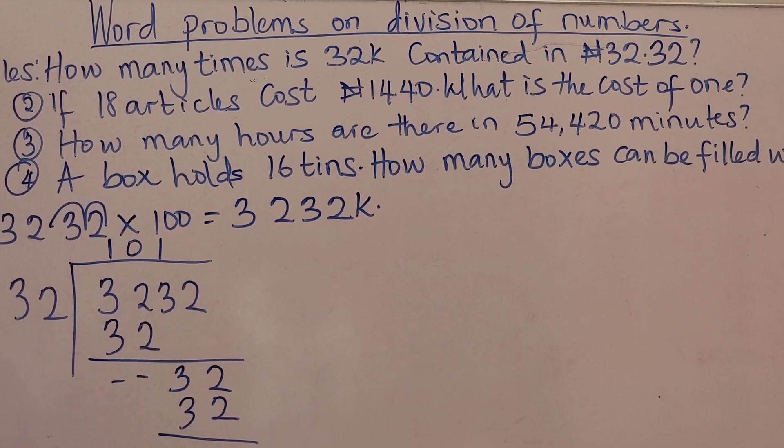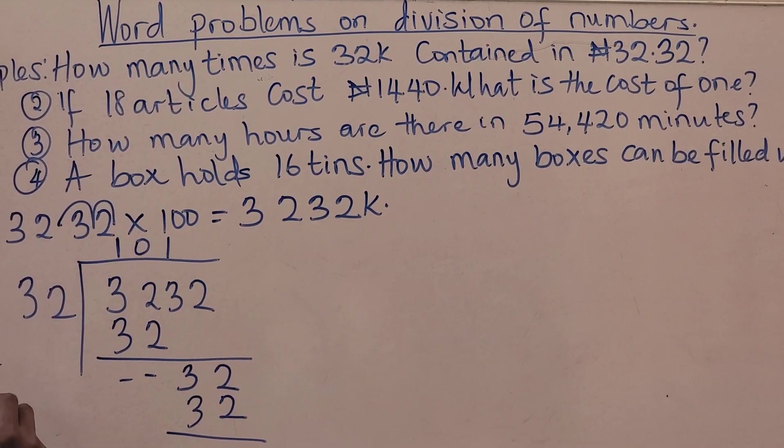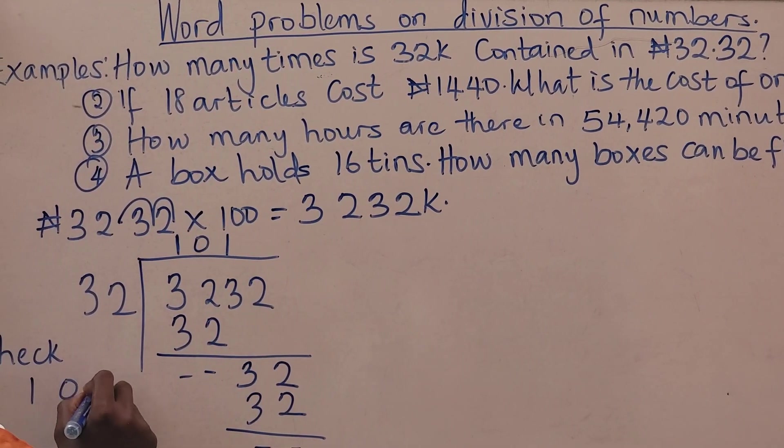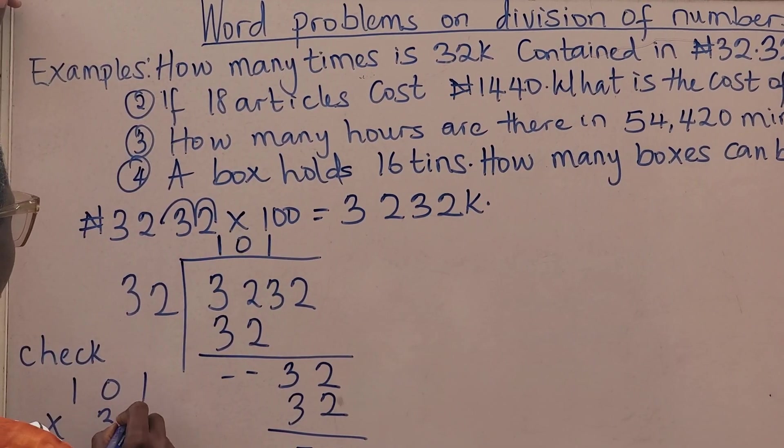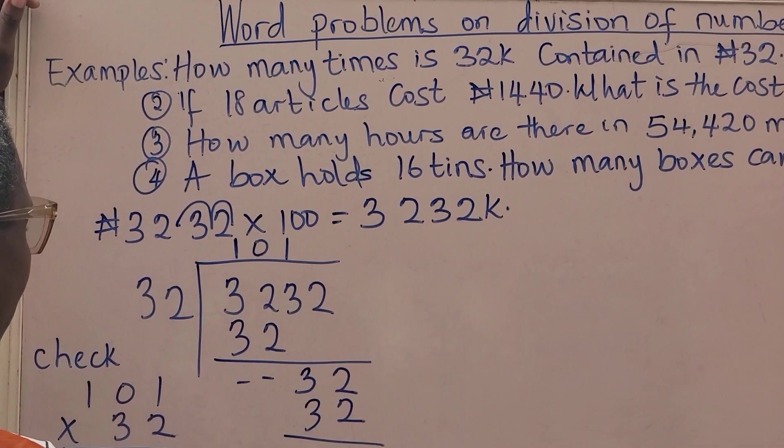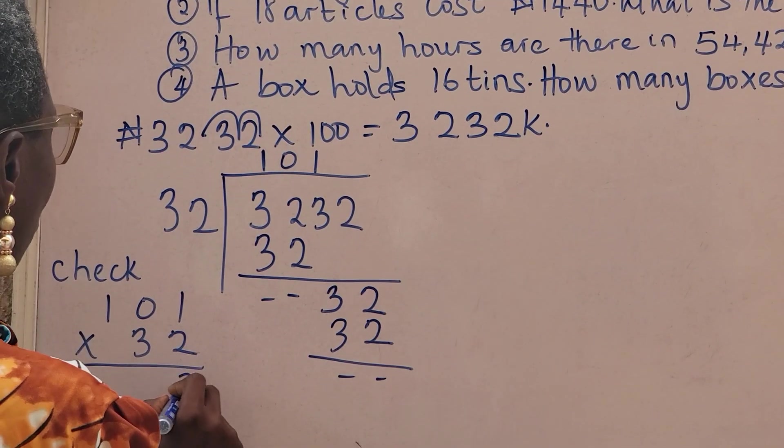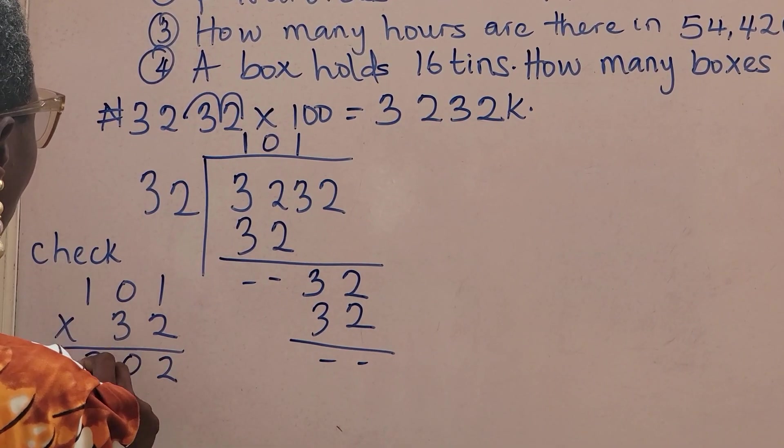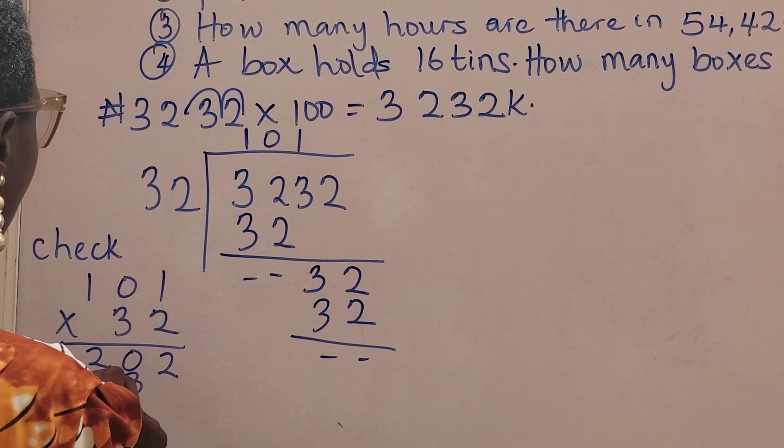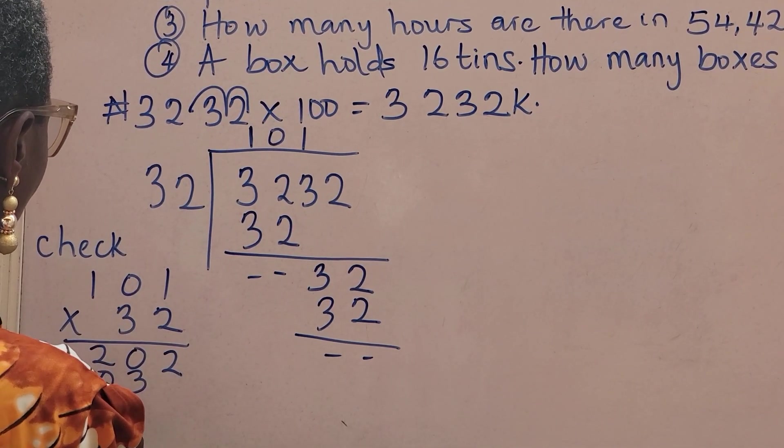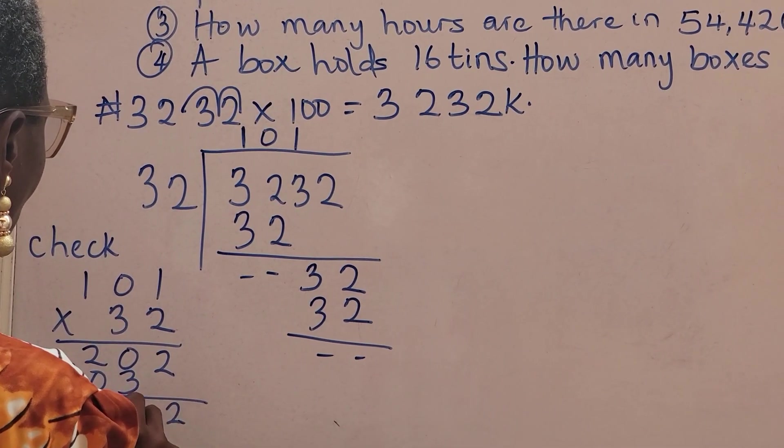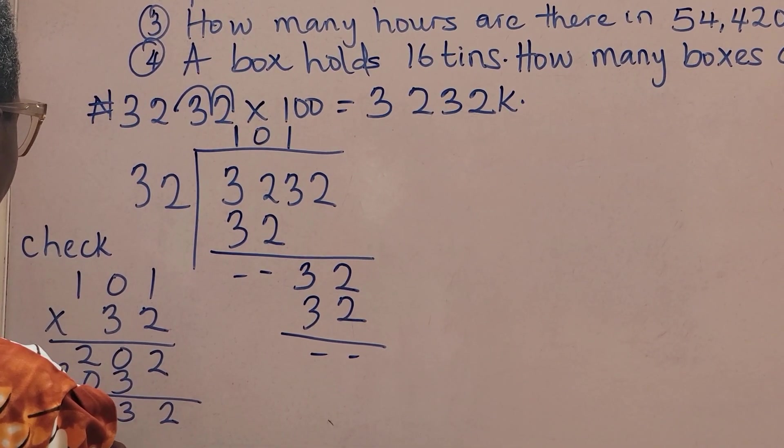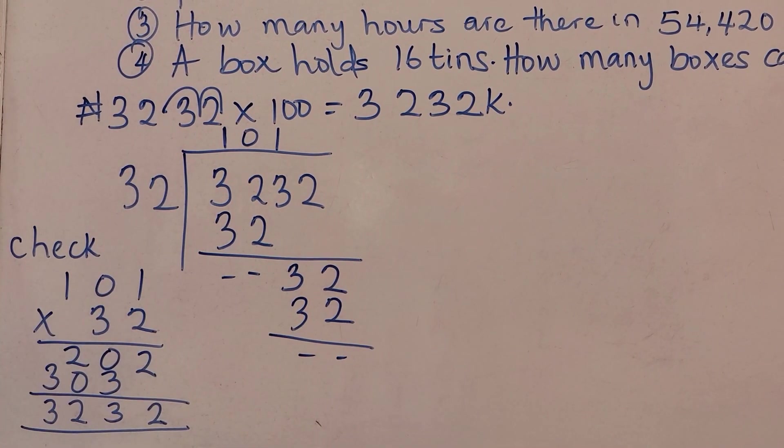We check. We have 101 times 32. 2 times 1 is 2, 2 times 0 is 0, 2 times 1 is 2. Then 3, 0, and 3. We have 3,232, which means we are correct.